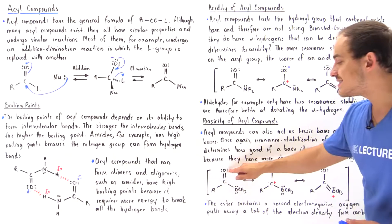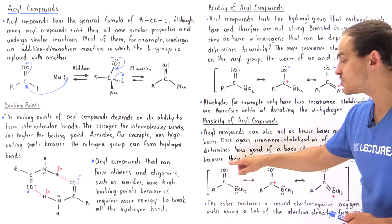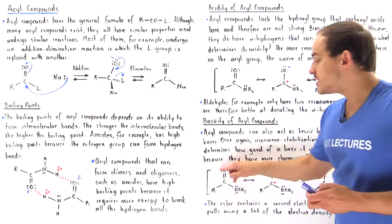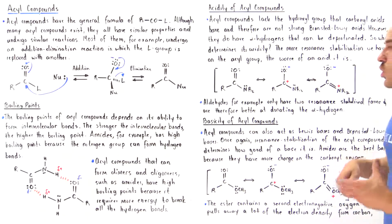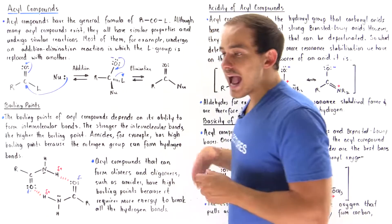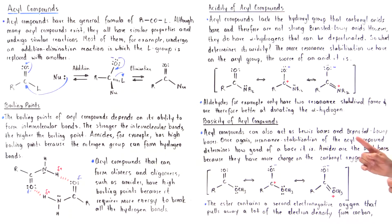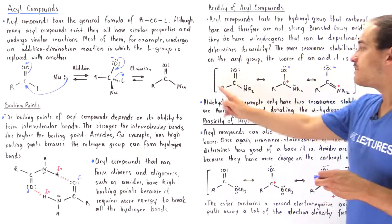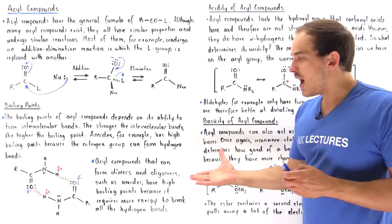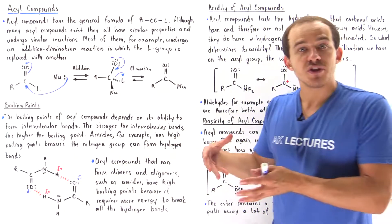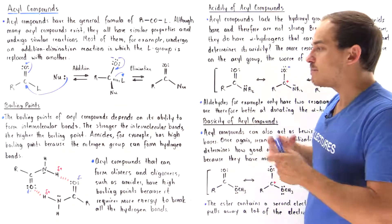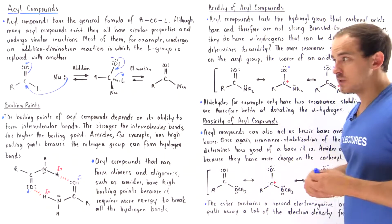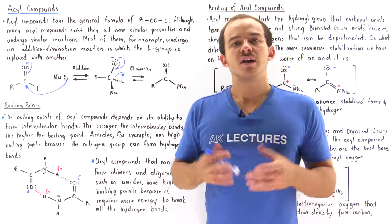Because the carbonyl oxygen is the center of basicity, having less electron density on it means the ester is a worse base than the amide. So amides are generally good bases but poor acids, because they have too many resonance-stabilized structures. They also have relatively high boiling points because they form dimers and oligomers via intermolecular hydrogen bonds, requiring more energy to vaporize from the liquid phase into the gas phase.